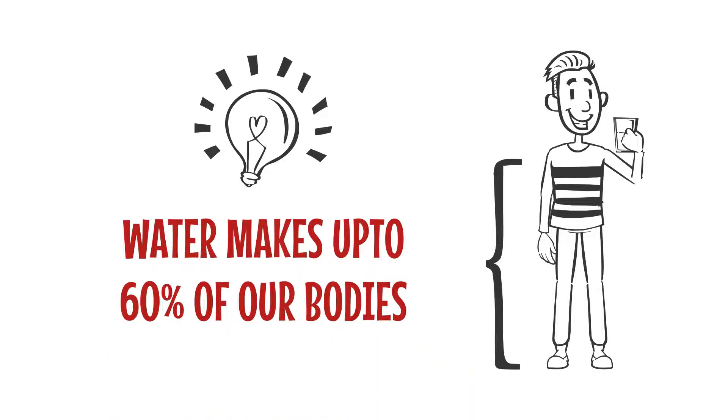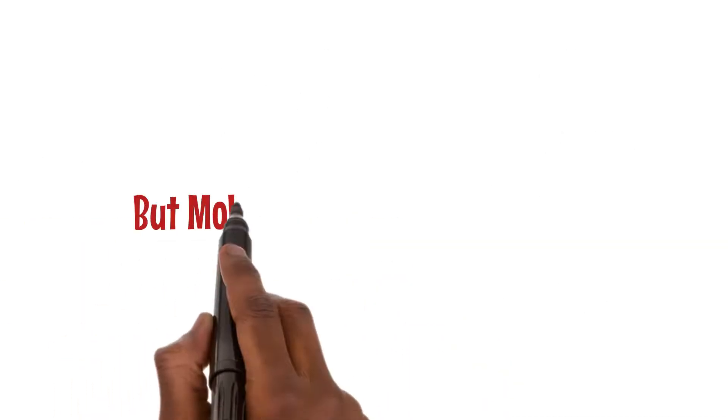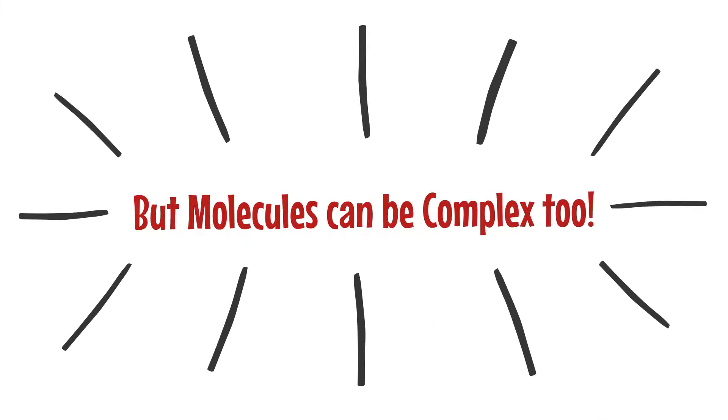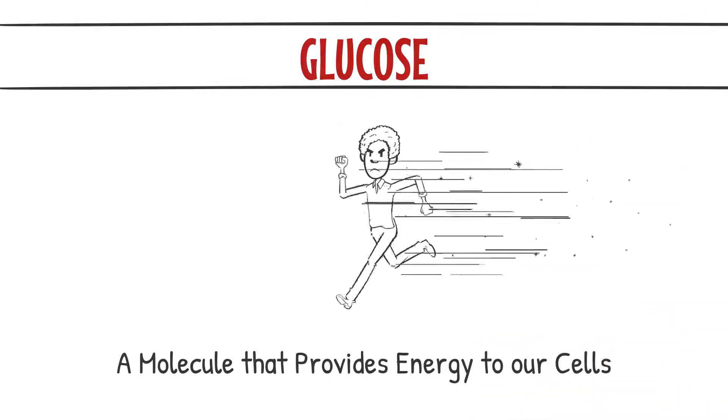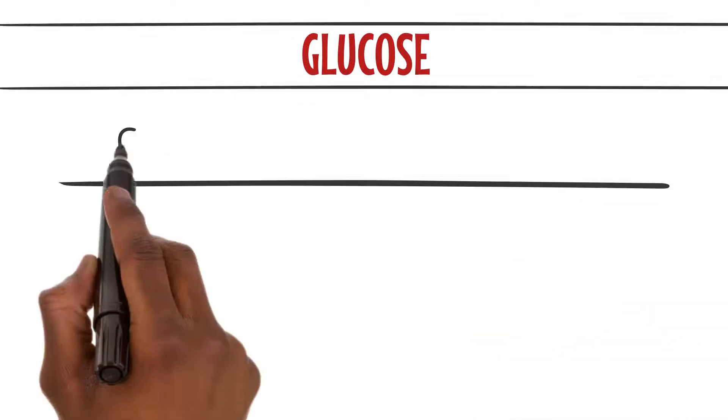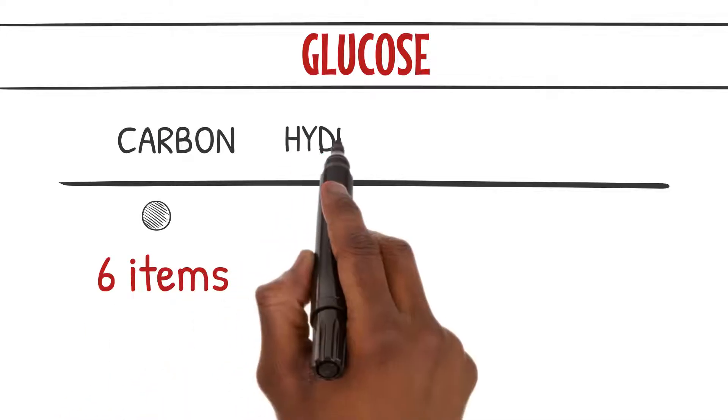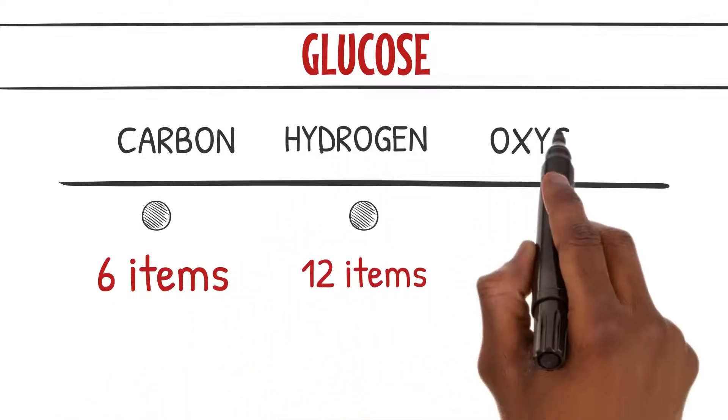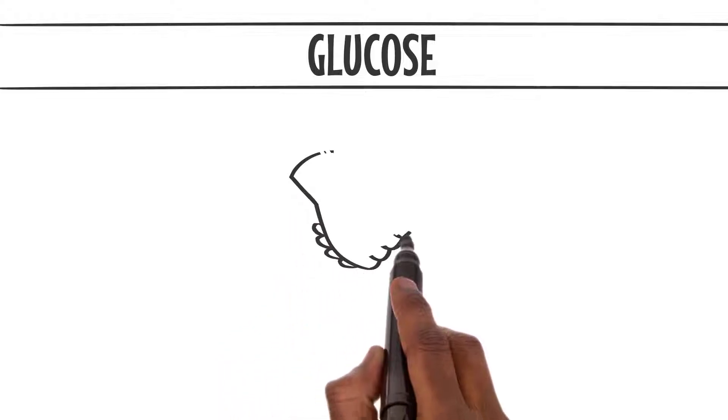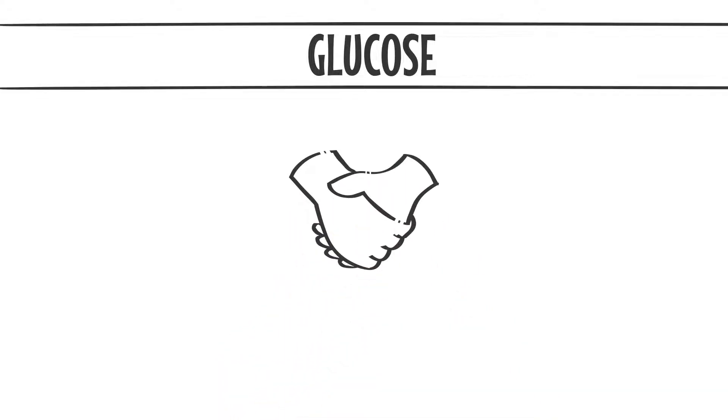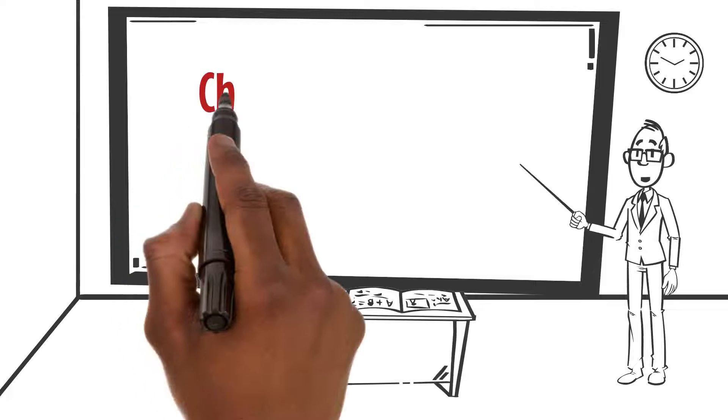But molecules can be more complex too. Let's talk about glucose, a molecule that provides energy to ourselves. It's like a superstar fuel for our bodies. Glucose is made up of six carbon atoms, 12 hydrogen atoms, and six oxygen atoms, all bonded together in a beautiful symphony of atoms. Now let's move on to chemical arithmetic.